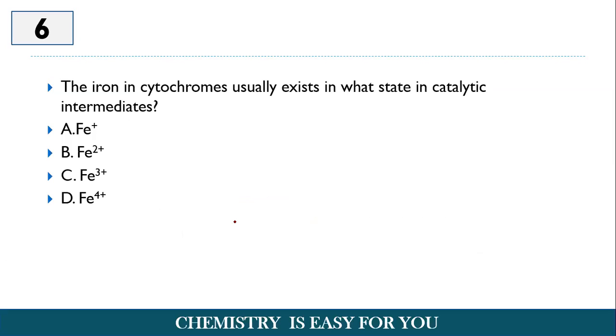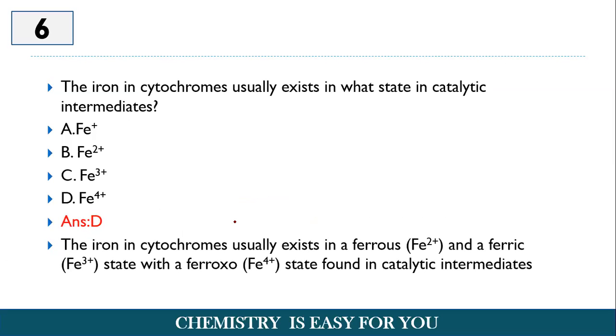So we have Fe+, Fe2+, Fe3+, and Fe4+. So the answer is option D, Fe4+. So the iron in cytochromes usually exist in ferrous and ferric state with the ferroxo state found in the catalytic intermediate. So the main important in the stable states, it's in the Fe2+, Fe3+, but in the intermediate state, that is intermediate state, it acts as a ferroxo state, that is Fe4+. So iron in cytochromes exist in three forms, Fe2+, Fe3+, and it has an Fe4+ state in the catalytic intermediates.